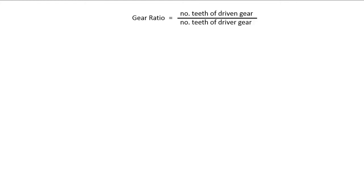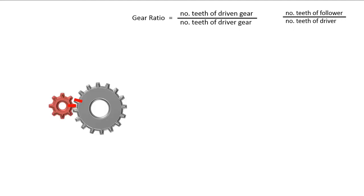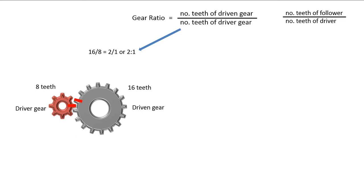Let's now apply the gear ratio concept to two different setups. Recall that gear ratio is the number of teeth of the driven over the number of teeth of the driver, as well as this version. Here we have an eight-tooth gear and a 16-tooth gear. We attach a motor to the smaller gear, so it becomes the driver gear. The larger one is automatically the driven gear. The gear ratio is 16 over 8, or 2 to 1. This number is greater than 1, and so is considered to be a high gear ratio.